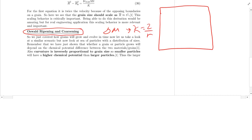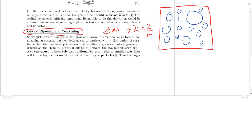Let's say from a liquid solution I precipitate spherical particles of various sizes — big particles, small particles, tiny ones, all over the place. Let's say that on average, my average particle size is some value — this will be helpful for your problem set. Now, what is our intuition for which particles will grow and which particles will shrink?